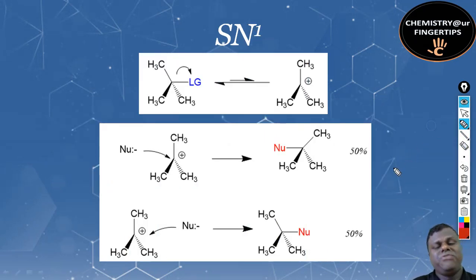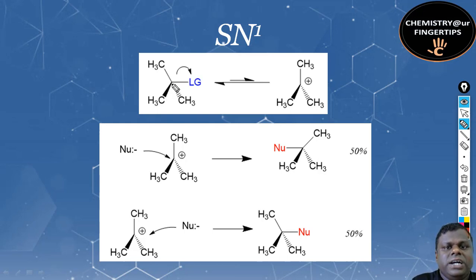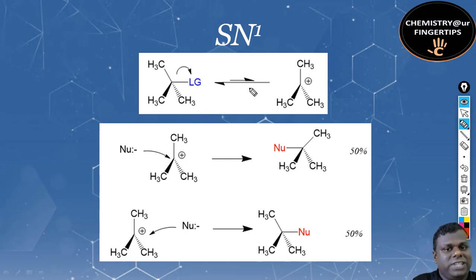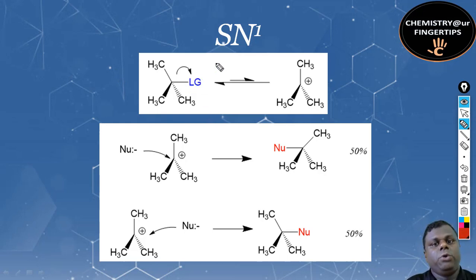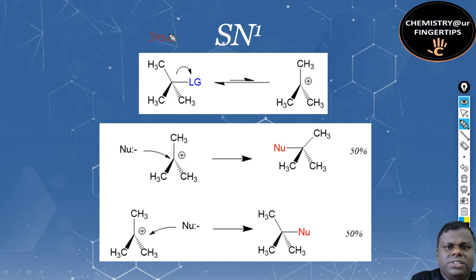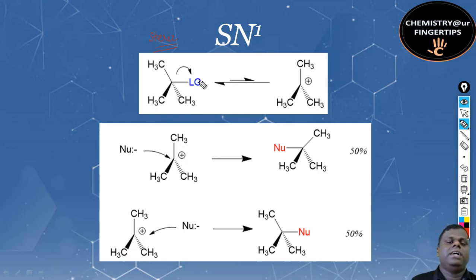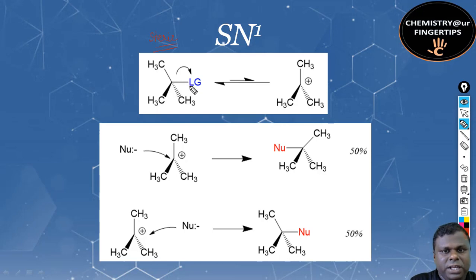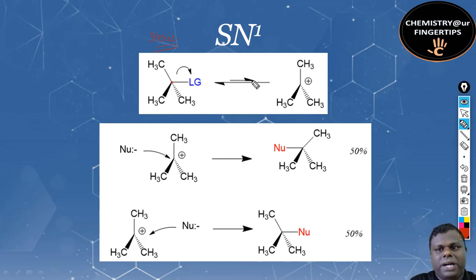Now the SN1 reaction is most frequently asked in the exam because it has a lot to look at. Here we have a carbon attached to three alkyl groups — quite crowded — with a leaving group. The leaving group must be substituted by the nucleophile, but the nucleophile cannot approach from the front due to repulsion, and it cannot approach from the backside due to steric hindrance. So if the leaving group leaves with the electron pair, a carbocation is generated.